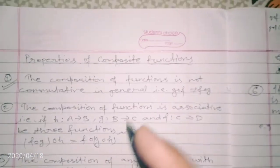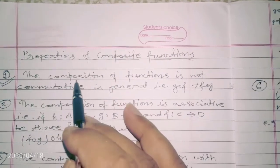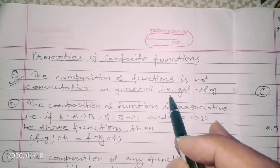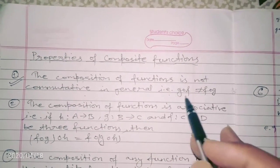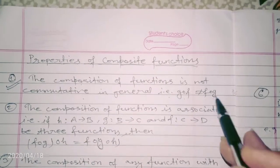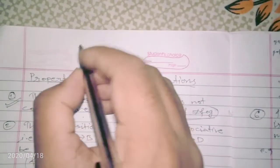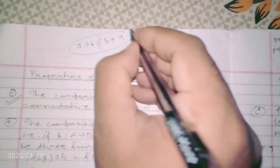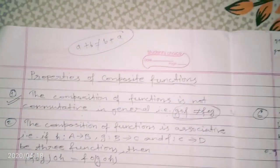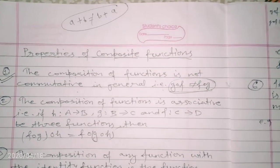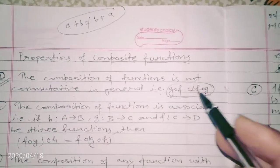The first property is that composition of functions is not commutative in general. We have already proved that gof is not equal to fog. This is similar to addition where a plus b equals b plus a — but for composition of functions, gof is not equal to fog. So composition does not follow the commutative law.